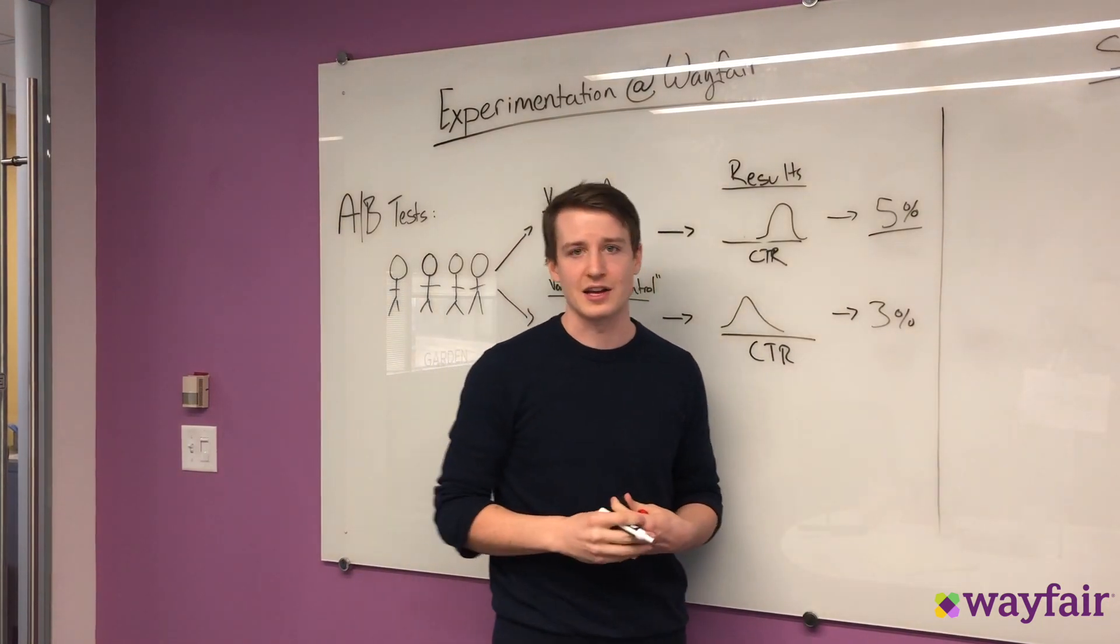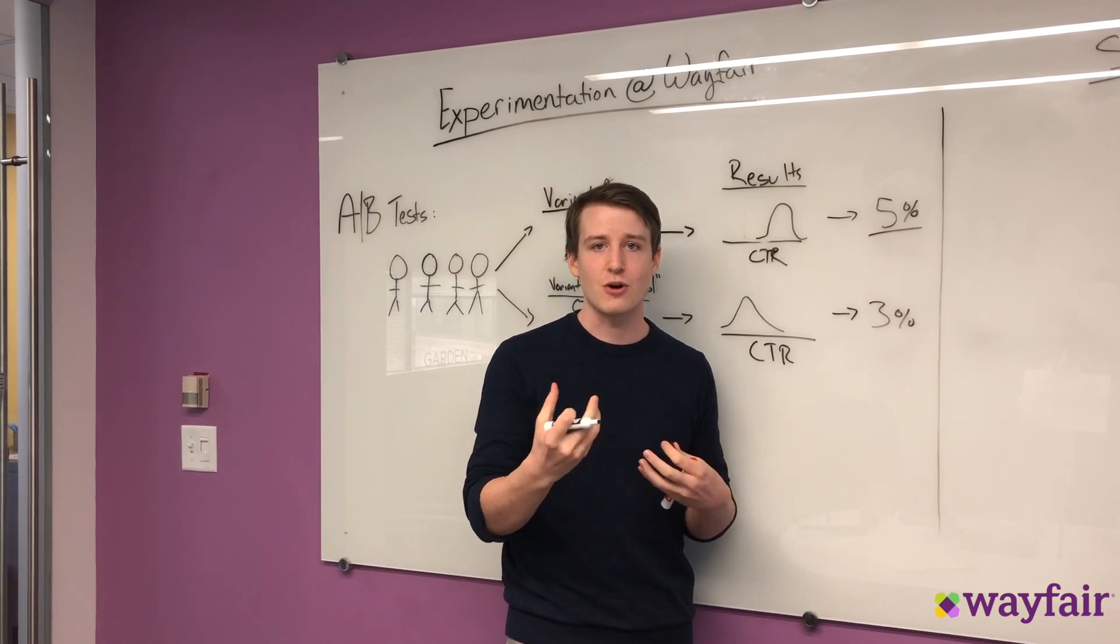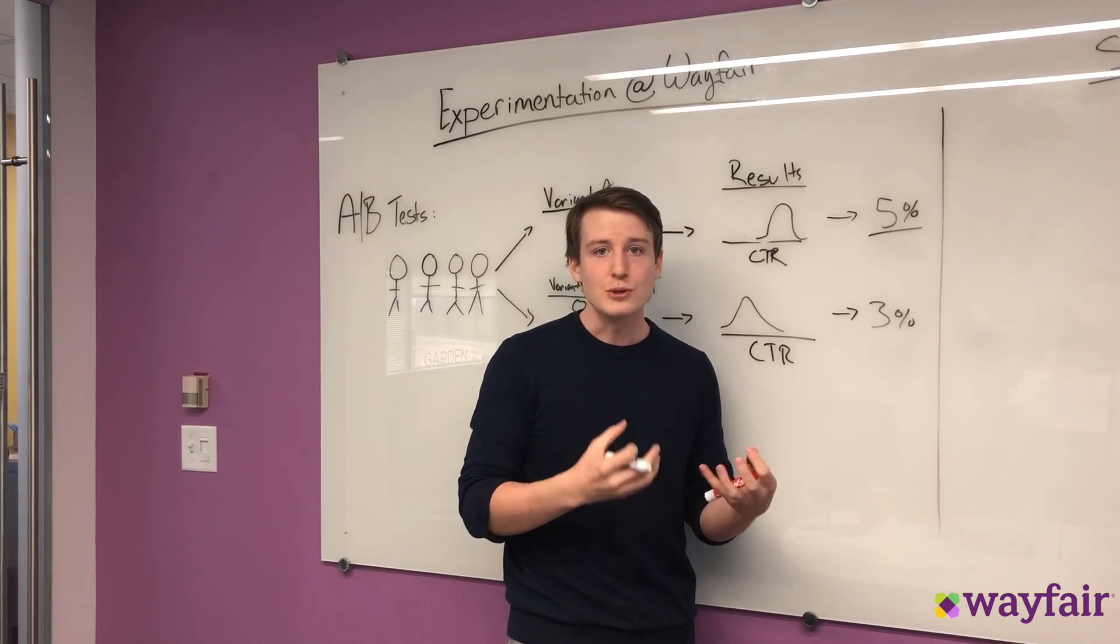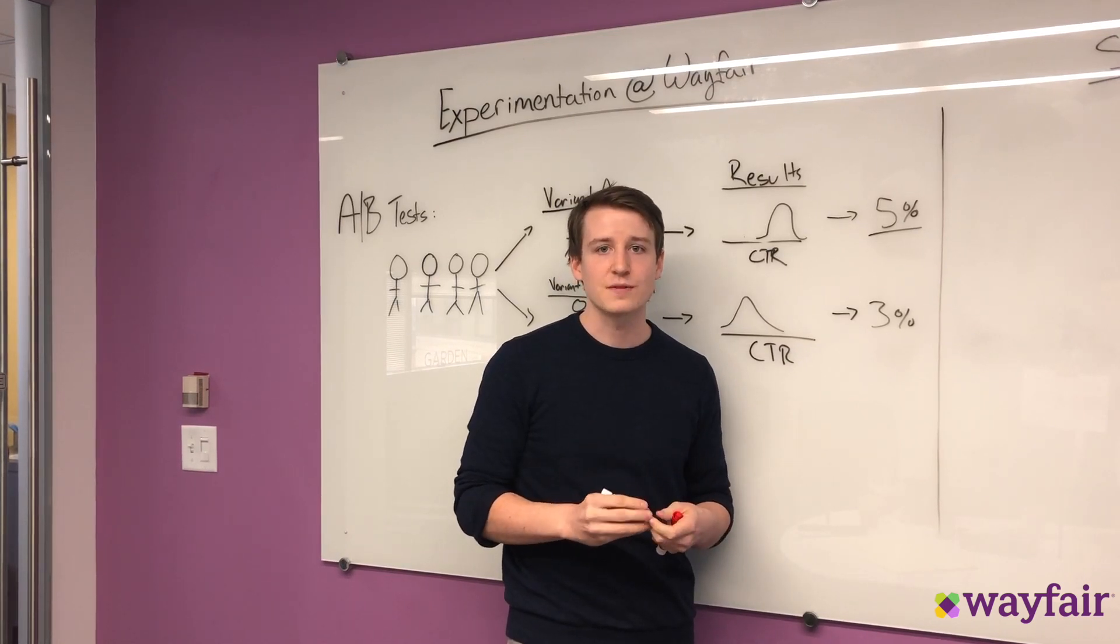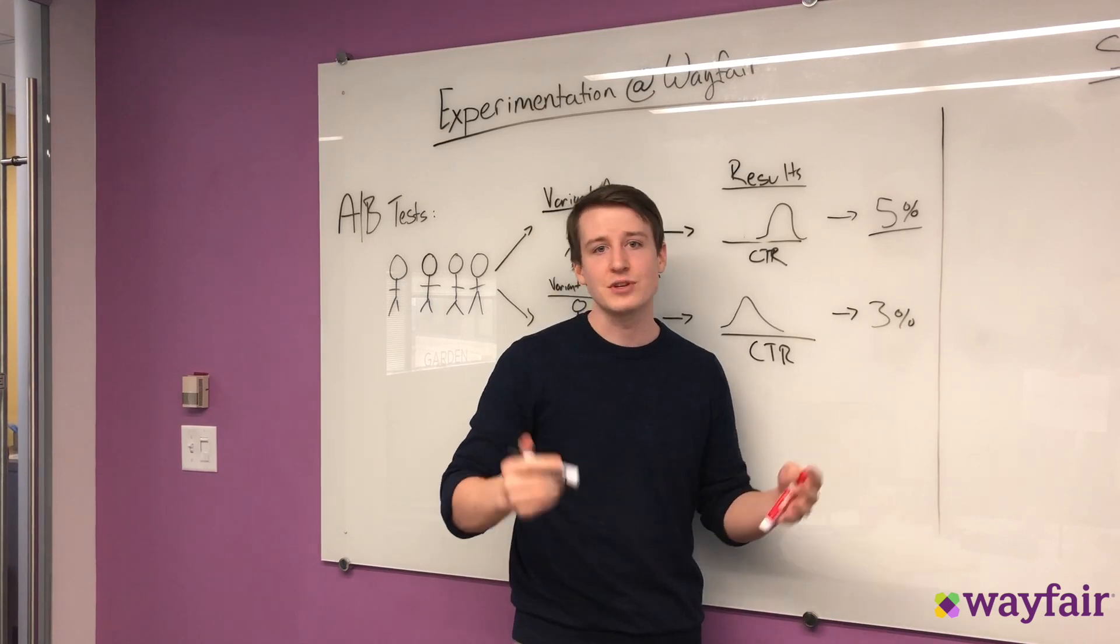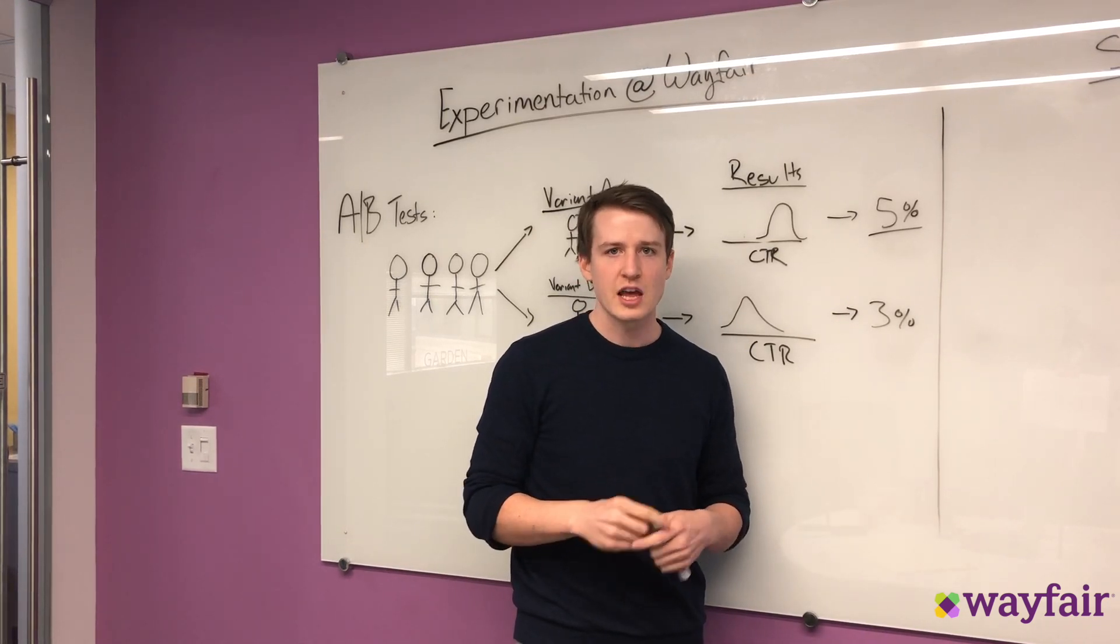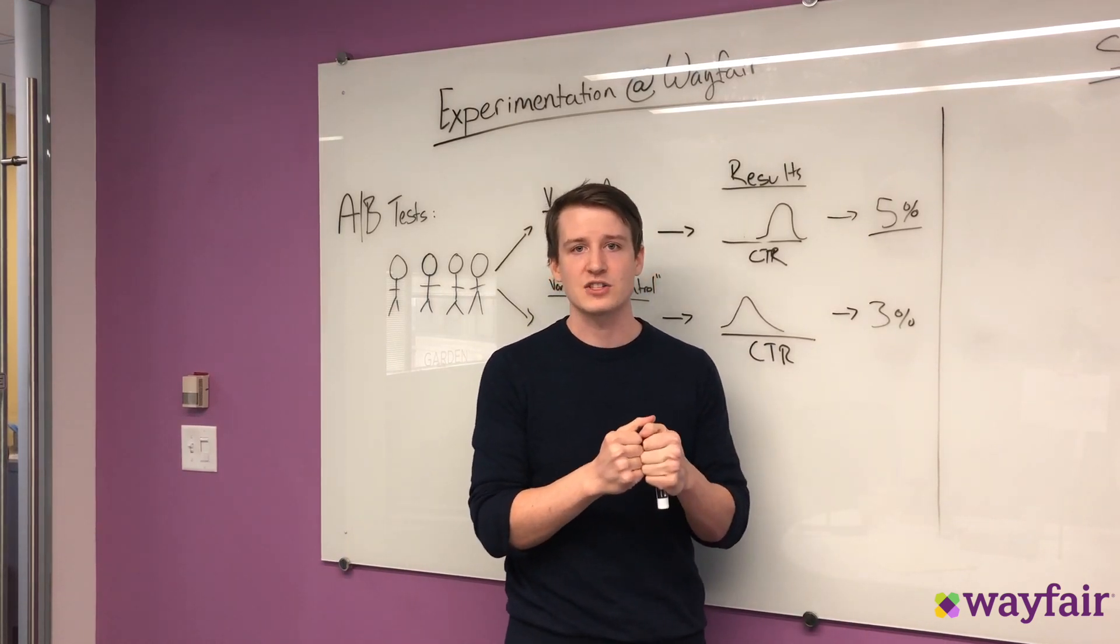But there's a major downside of doing A/B tests because it requires you to be able to show your two different groups two different things. The product that I'm focused on at Wayfair is identifying substitutable product groups, which is combing through the 15 million different products that we sell and trying to group together products that customers view as substitutes.